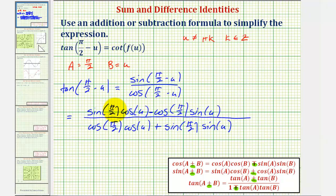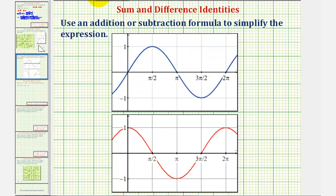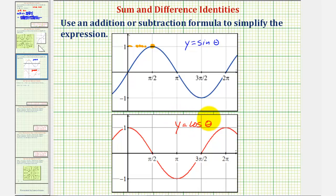Now we'll evaluate sine of pi over two and cosine of pi over two. On the unit circle, x equals cosine theta and y equals sine theta. At pi over two radians, the x coordinate is zero and the y coordinate is one, which means cosine of pi over two equals zero and sine of pi over two equals one. We can also confirm this from the graphs of y equals sine theta and y equals cosine theta: at pi over two radians the sine function value is positive one and the cosine function value is zero.